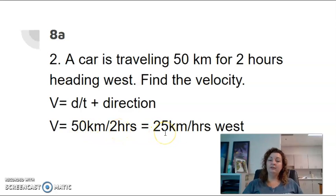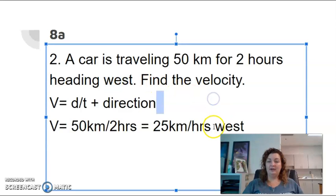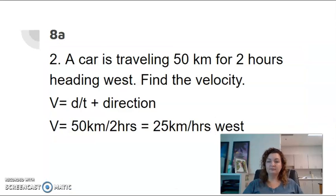I'm putting that in there for two hours. Divide that in my calculator, and I get 25. Now my units are the same way as I do speed. I'm just going to rewrite them in the same order, kilometers per hour, kilometers per hour. Do you guys see that? And then I'm going to put a direction. So it told me it's heading west. So I need to make sure I add that to the end of my math answer. And that is how you find velocity.